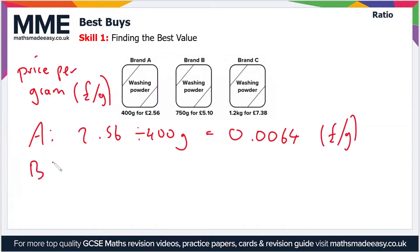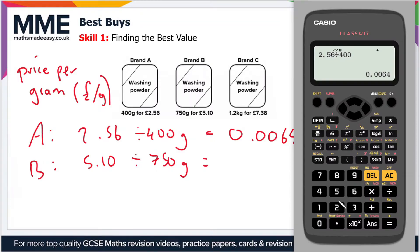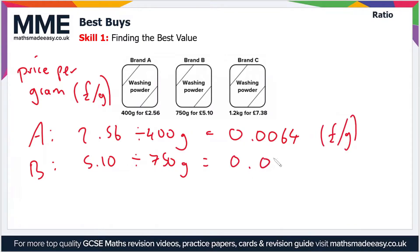Doing the same for Brand B, we've got £5.10 divided by 750 grams, which gives us 0.0068. So Brand B is more expensive than Brand A.